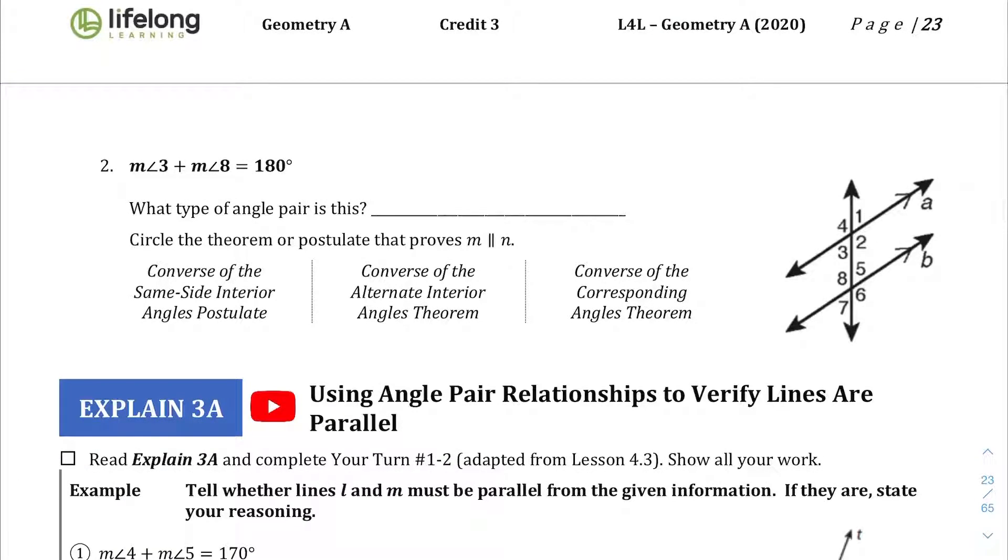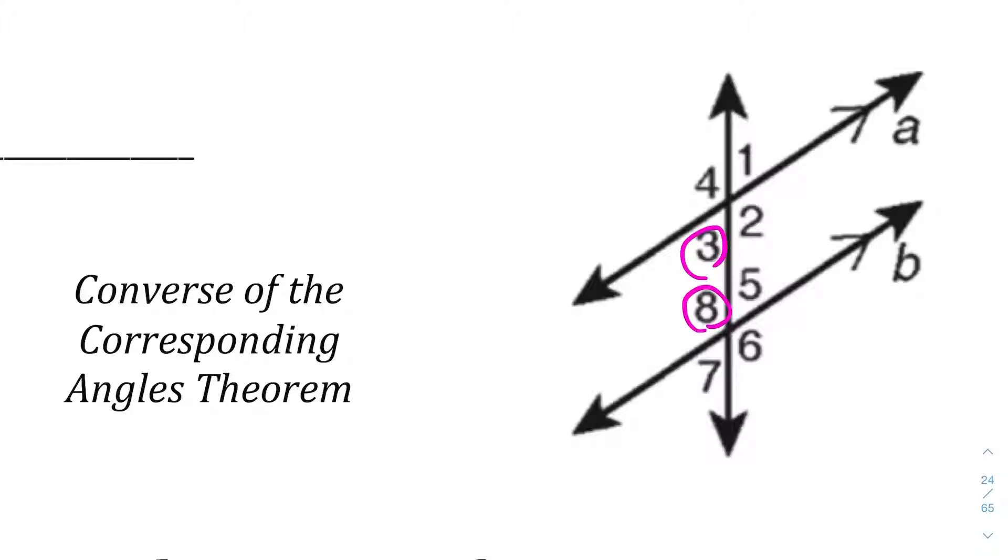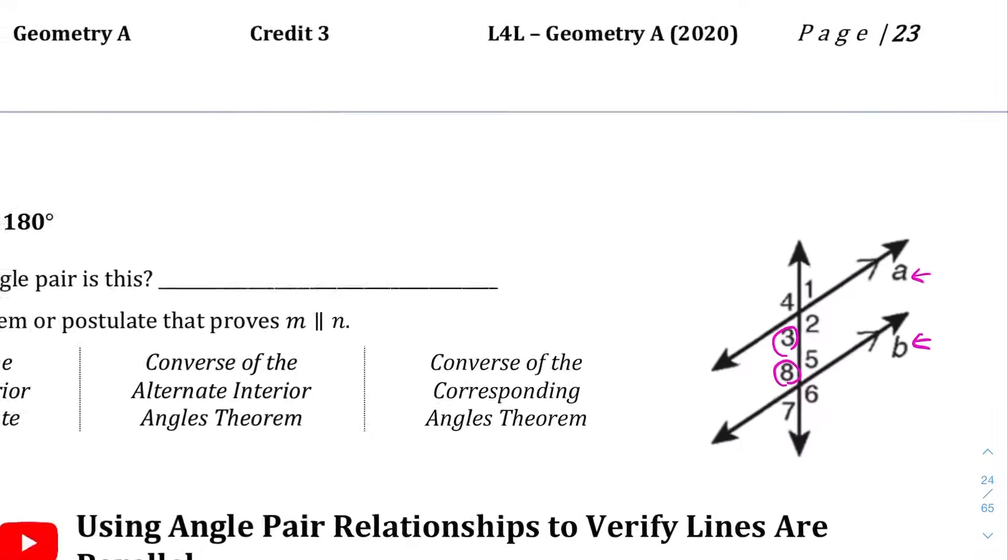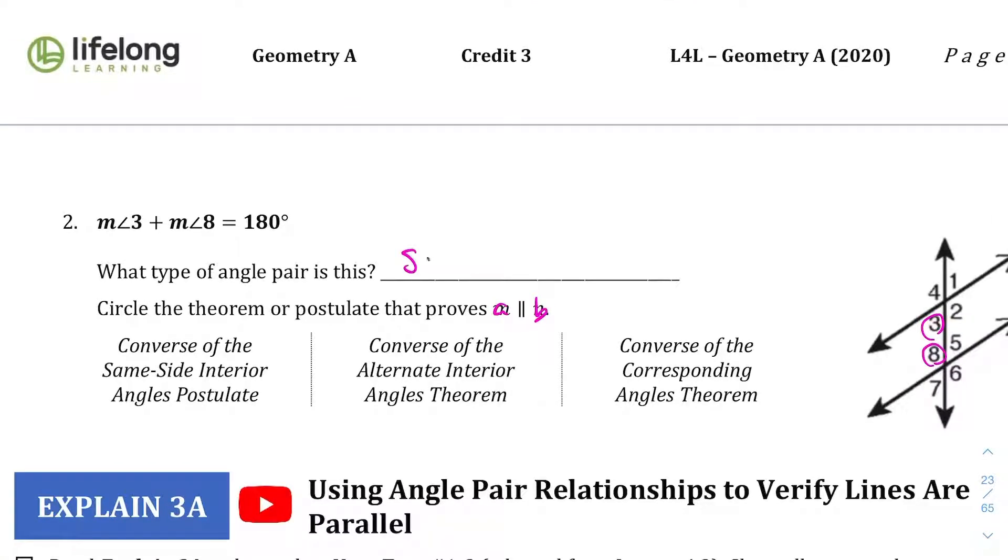Okay, so question or example two here, we have the measure of angle three and the measure of angle eight being equal to 180. So three and eight are same side interior angles, which we know from the previous section or the previous lesson. Same side interior angles are supplementary. And that's only true when these two lines, line A and line B are parallel. So again, A and B. And so what type of angle pair is this? They are the same side interior angles. And so we want the converse of the same side interior angles postulate, which is right there, that one.